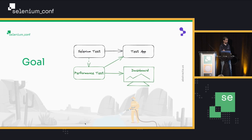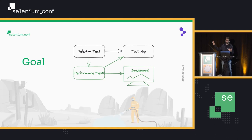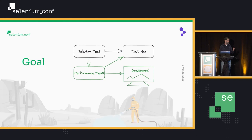What we want to achieve is this: we have our Selenium test that connects and exercises our test application. We want to be able to generate a performance test or a load test from it, and that performance test will generate load in the test app while the Selenium test is also running, so as to measure the front-end metrics or the user experience while the backend application is being loaded by many, many users. On top of all that, we want a dashboard to visualize how this load is actually impacting the user experience.